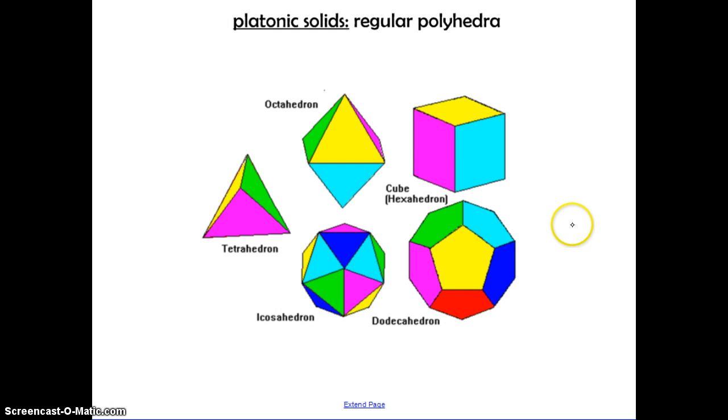The platonic solids are regular polyhedra, and these are polyhedrons that are bounded by the same regular polygon. So we have equilateral triangles, we have squares, we have pentagons. You don't have to memorize what these are, but this is just for your reference.